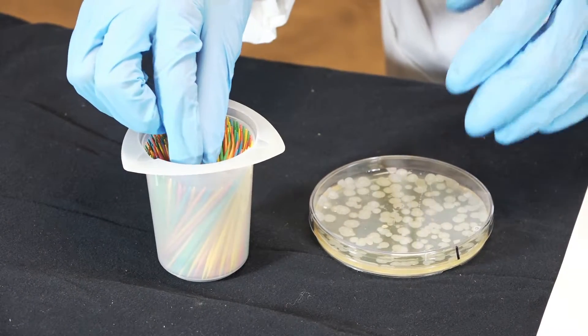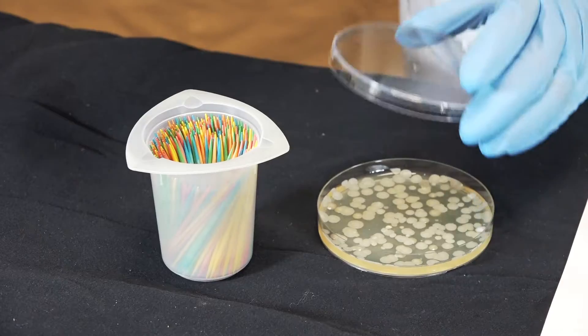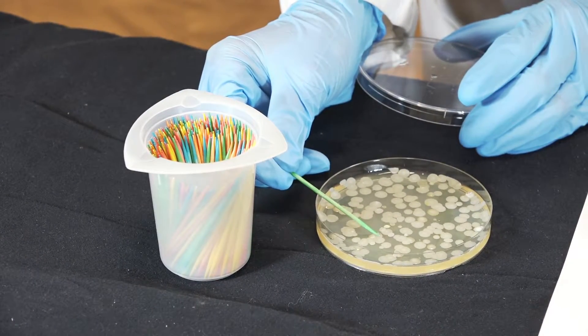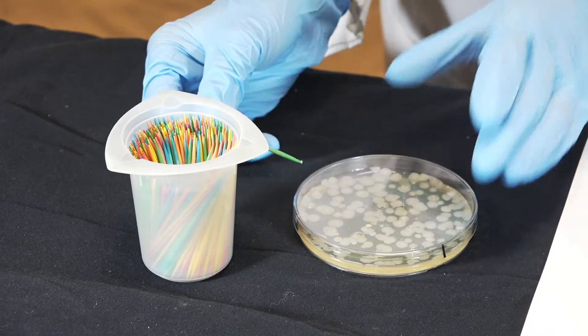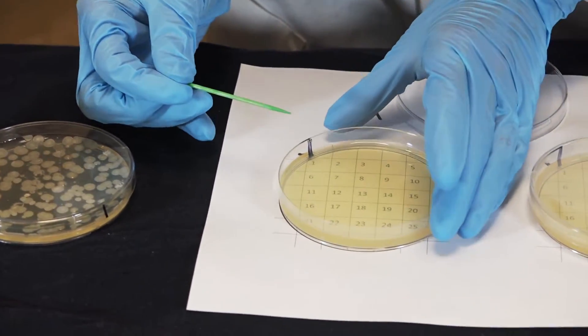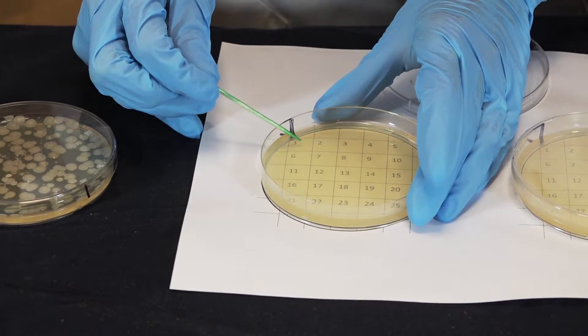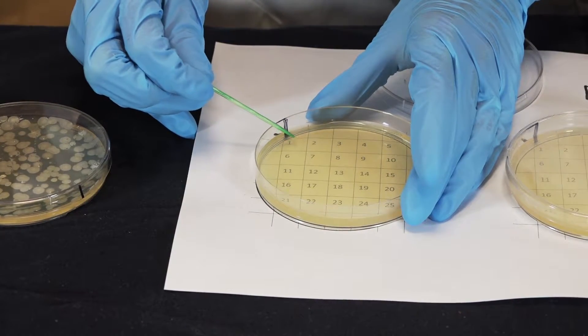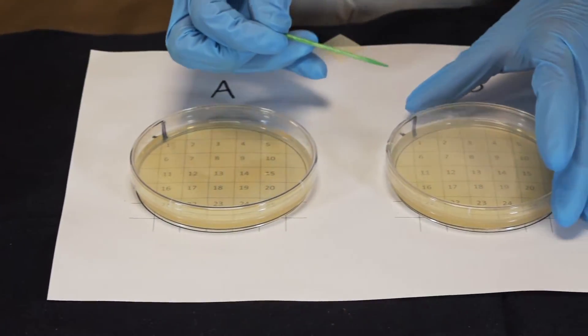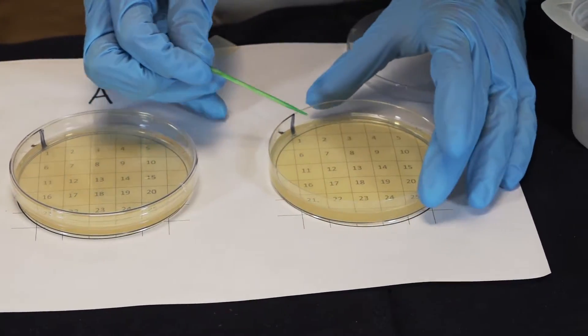We're going to use a sterile toothpick and pick a colony from this plate. Then we're going to inoculate square one on plate A and square one on plate B.